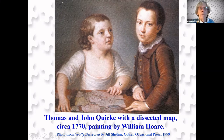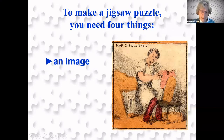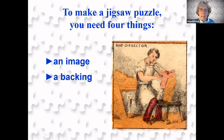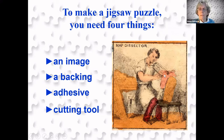I want to give you a little aside on how puzzles are made. You need four things: an image — in this case, the map — either that you create or one that you purchase; a backing, which originally was always a thin piece of wood, mahogany in the 18th century and other woods later on, but nowadays it's mostly cardboard; glue; and what we have in this portrait of a map dissector is he's using a fret saw, which you can think of as being like a coping saw, but much longer.